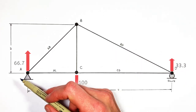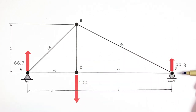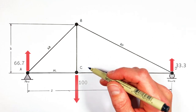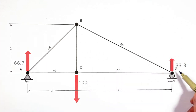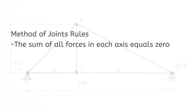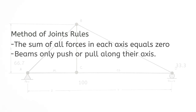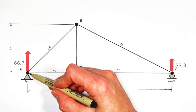The method of joints treats each joint like a free body diagram, and we work our way through the truss like a puzzle, making the sum of all forces on each joint add up to zero. The rules when solving trusses using the method of joints: the sum of all forces in each axis needs to equal zero; the beams can only act to push or pull along their axis; and the forces by a beam are equal in magnitude but opposite in direction on each side of the beam.